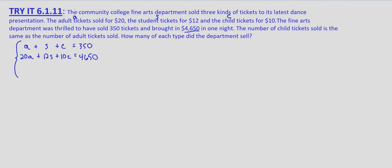Finally, we're told that the number of child tickets sold is the same as the number of adult tickets sold. So we know that A equals C, which means A minus C equals zero. So A minus C equals zero is our third equation.